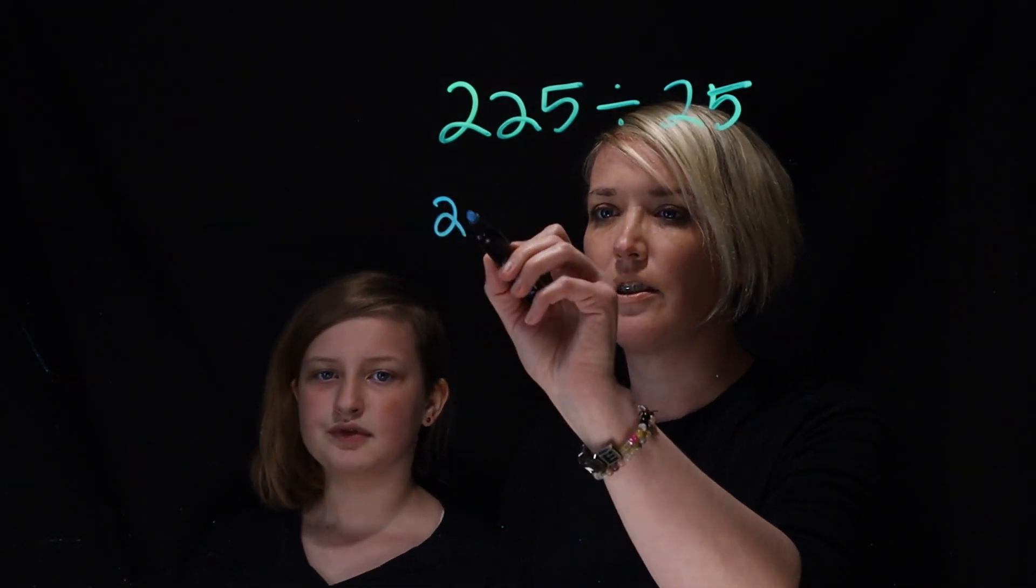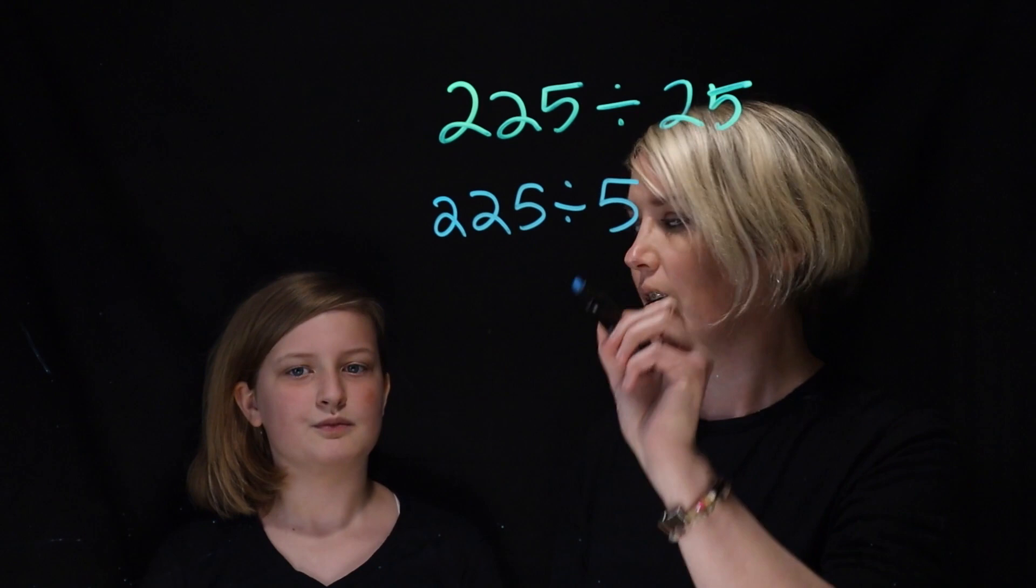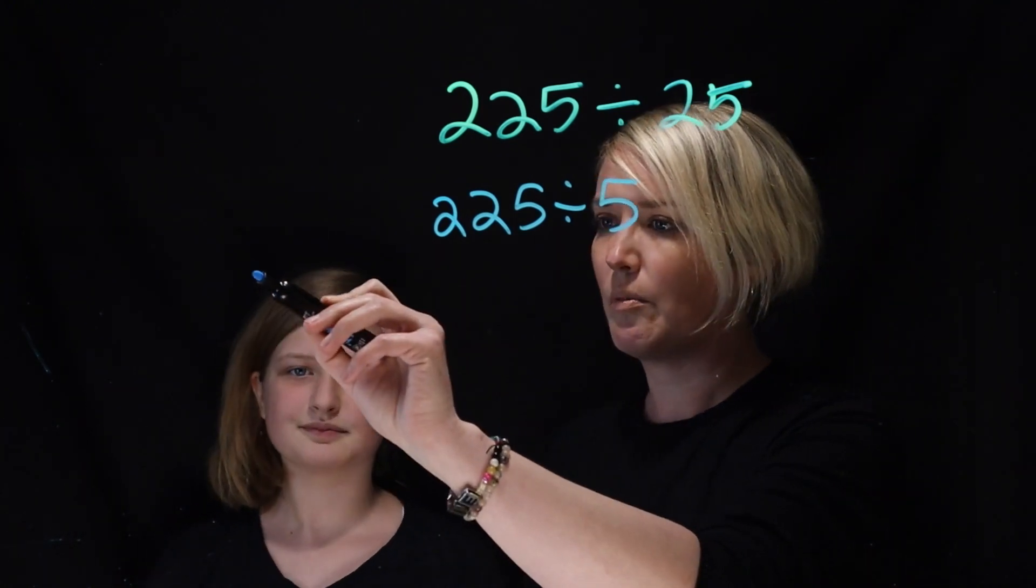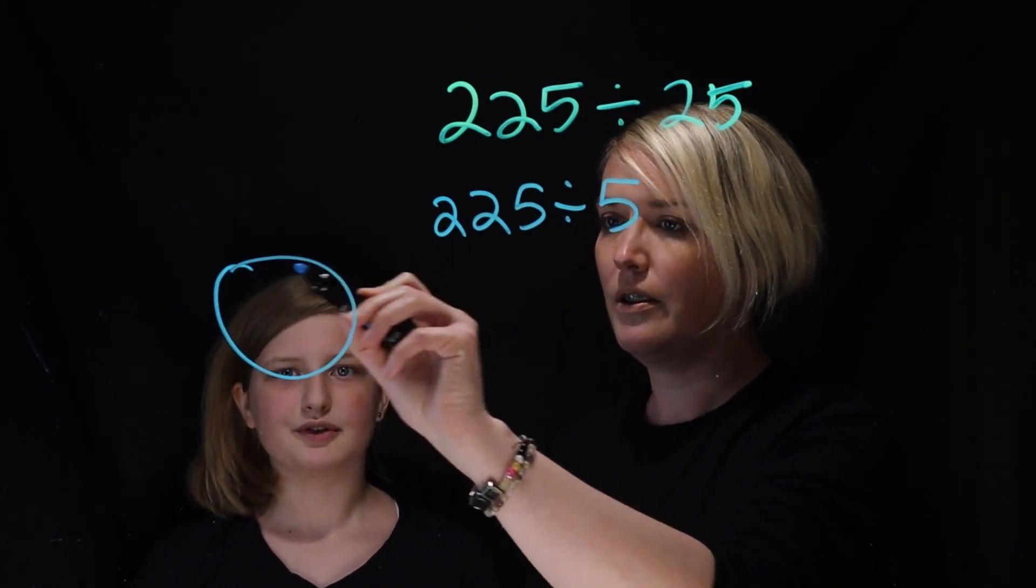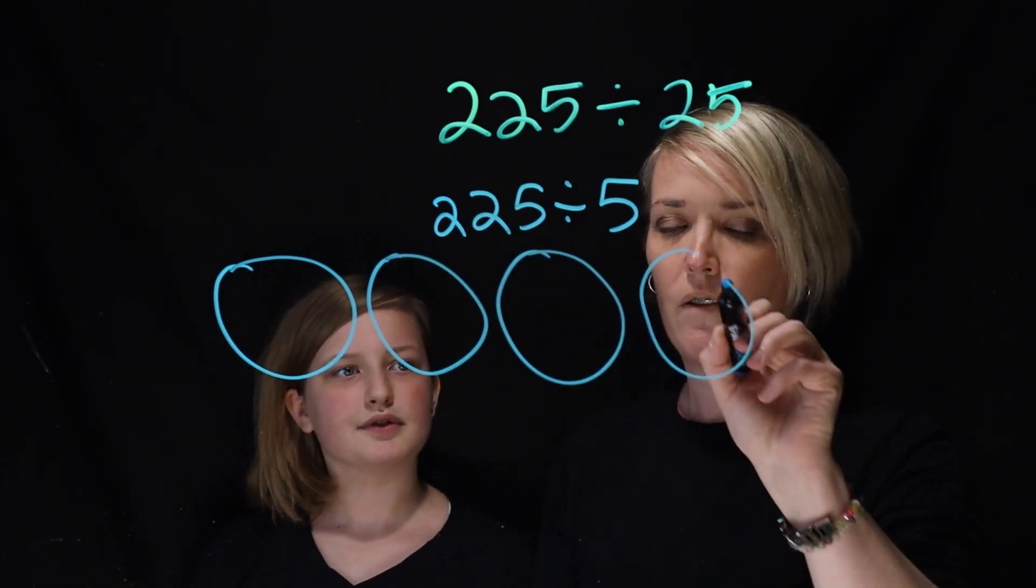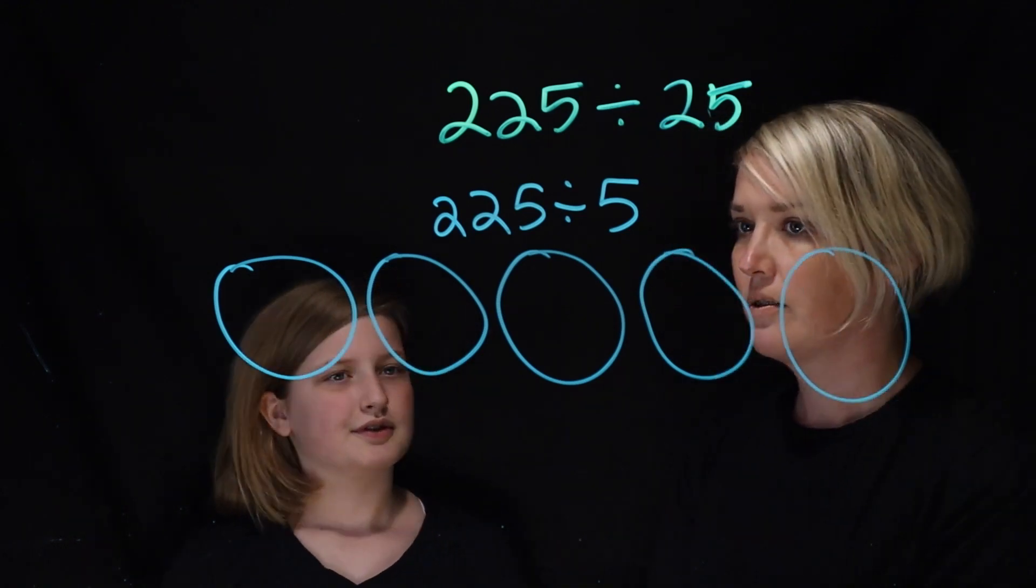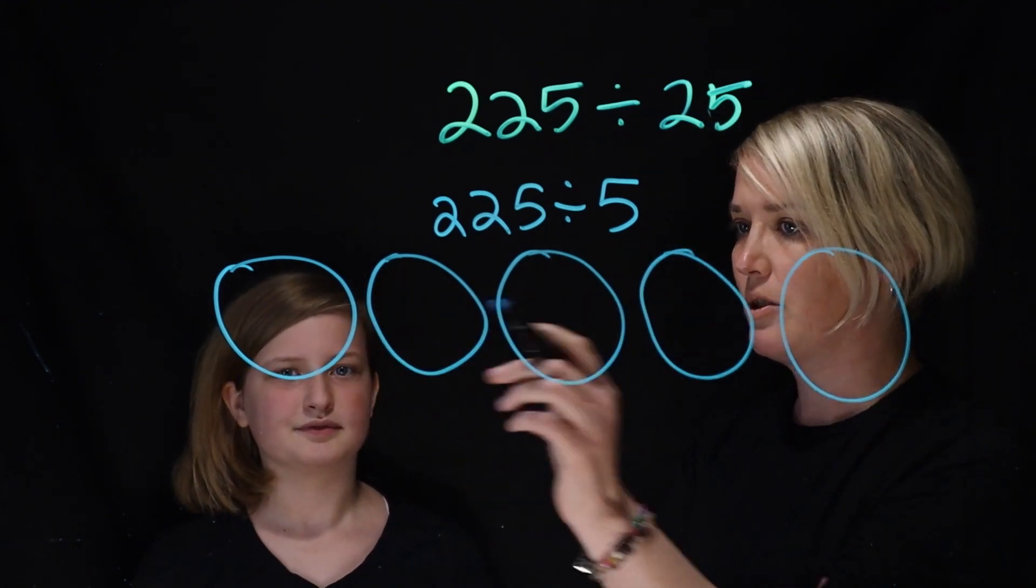So you're actually gonna think about 225 divided by five. Okay. So I'm gonna draw them out for us then. So there's one, two, three groups, four groups, and five groups. Okay. So 225 divided by five. How much did I put in here?